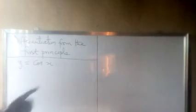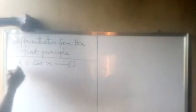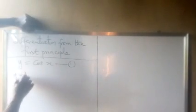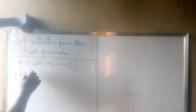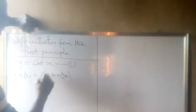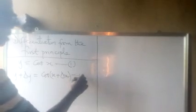Now, I want to differentiate from the first principle Y equals cos X. If Y equals cos X is equation 1, then adding the increment delta Y to Y gives Y plus delta Y equals cos(X + delta X). We call this equation 2.